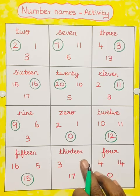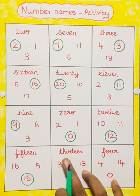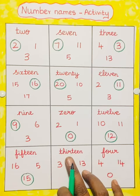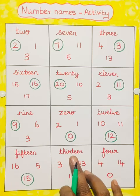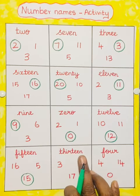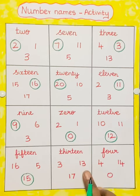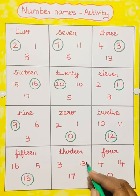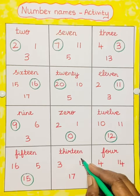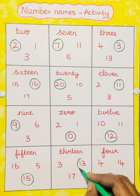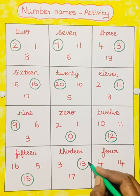13. T-H-I-R-T-E-E-N. 13. 3. 17. 13. So we have to circle the number 13.